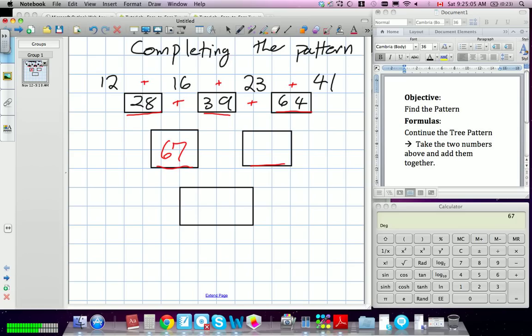And then we have, let's clear this, maybe that was the problem, 39 plus 64, is it 7 in the book? No, 64. Because we're taking that number from above, is 103.